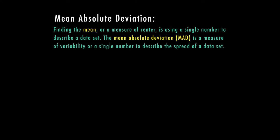Finding the mean or a measure of center is using a single number to describe a data set. The mean absolute deviation or MAD is a measure of variability or a single number to describe the spread of a data set.